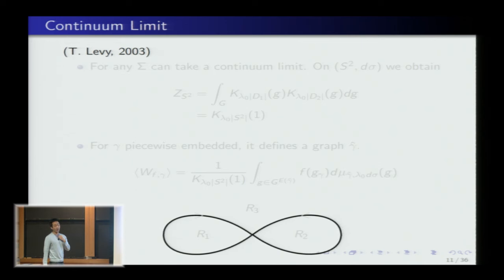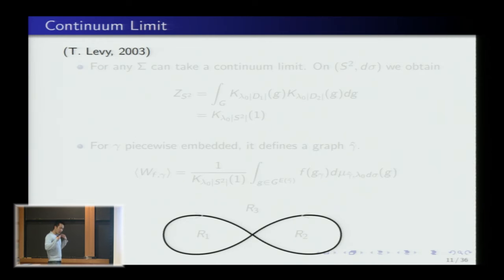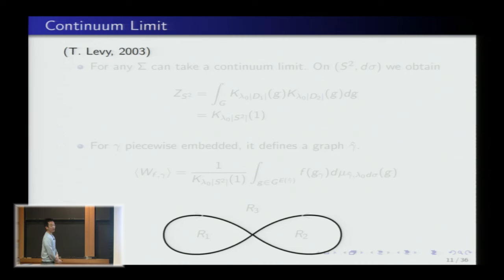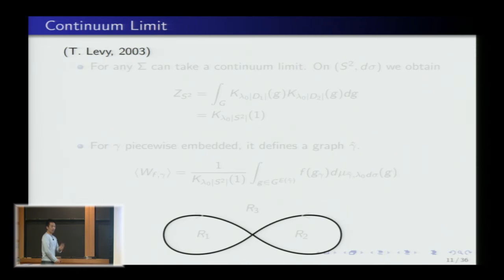For a more rigorous treatment of the continuum limit, there's a nice treatment due to Thierry Lévy, who in his thesis worked out all the probability theory. You want to understand: as you take a continuum limit, on what space does this measure live, and on what space are holonomy variables well-defined? You can make sense of the continuum limit in a measure-theoretic sense. The invariance under subdivision means you can already compute exactly without worrying about those measure-theoretic issues.